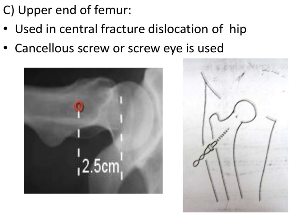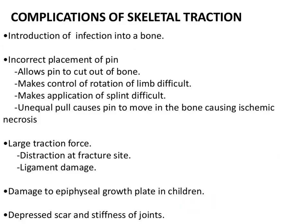For the upper end of femur, this is used in central dislocation or fracture-dislocation of the hip or fracture of the acetabulum. An undisplaced cancellous screw is applied 2.5 centimeters below the tip of the greater trochanter, midway between the anterior and posterior cortex.